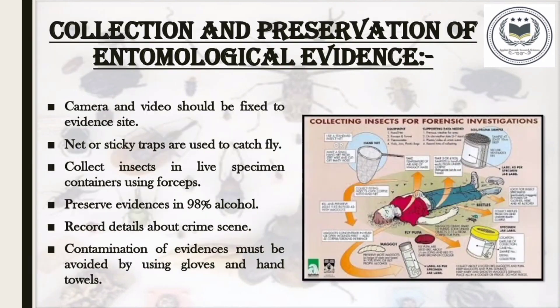Collection and preservation of entomological evidences is very necessary for successful crime scene investigation. It can be done by following several steps: fix camera and videotape at the crime scene; net and sticky traps can be used to catch flies; live specimens and killed creatures must be put in different jars; specimens must be collected with the help of forceps, spoon, or small paint brushes; the crime scene must be sketched and recorded; gloves and hand towels should be taken along to avoid contamination; and preservation is done using 98% ethanol solution.